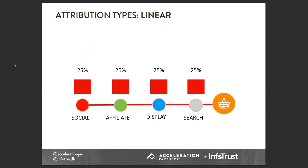Linear means that every single channel across the consumer's purchase journey gets a piece of the pie. With the same shopping behavior, we give 25% to social, affiliate, display, and search. This can be a challenging attribution model depending on how you're paying your partners. For affiliate marketing, it's hard with loyalty partners to say I'm going to pay you 25% of an order purchase, and then they have to give that piece back to the customer.